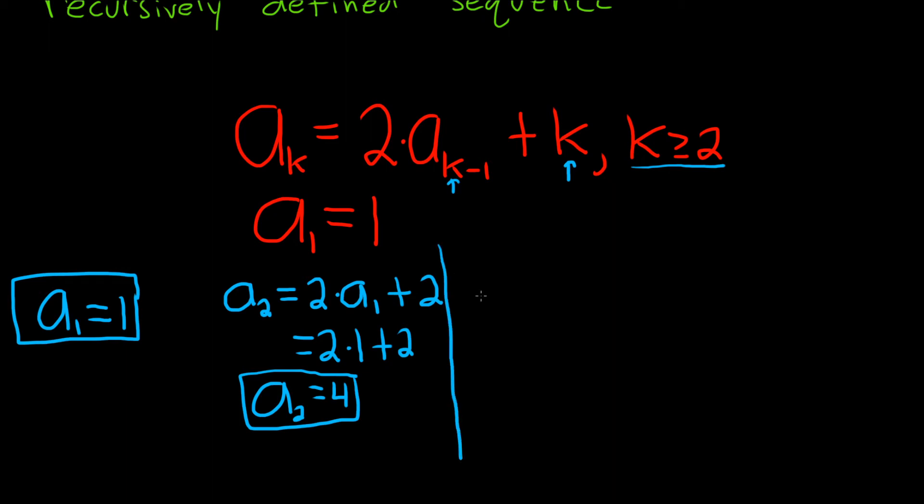Let's go ahead and do a sub 3. We're going to put a 3 where the k's are. So it'll be 2 times a sub 3 minus 1, which is a sub 2, plus k which is 3.